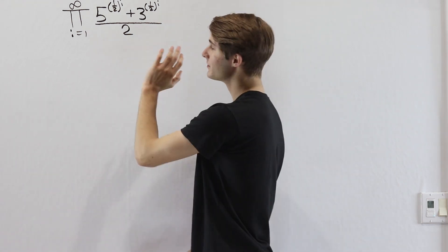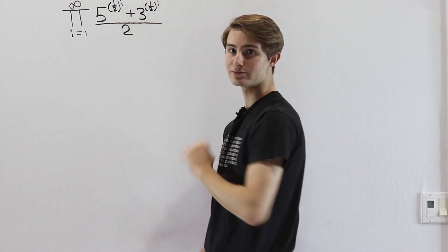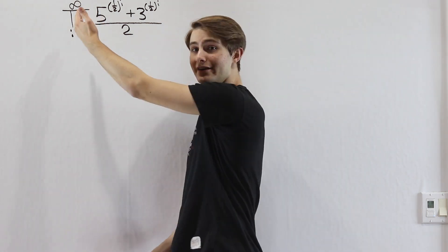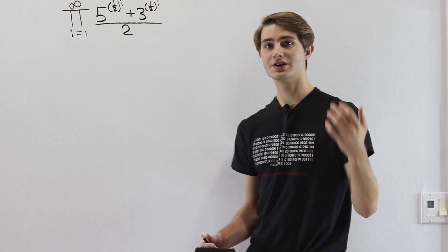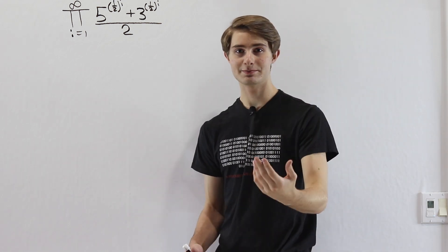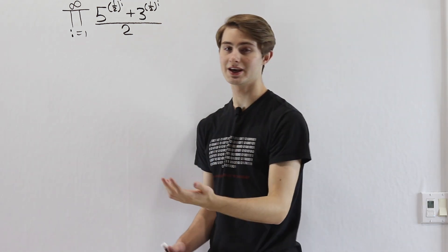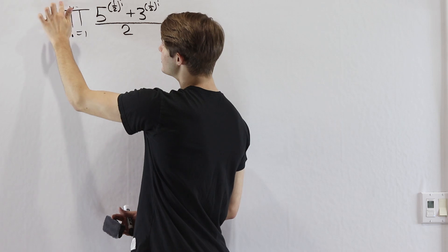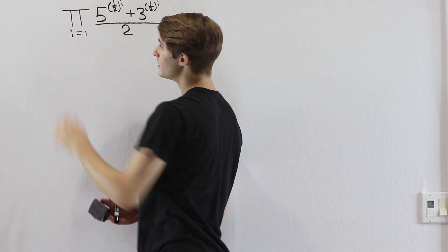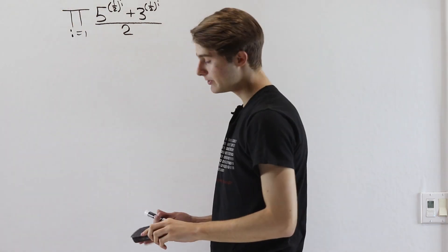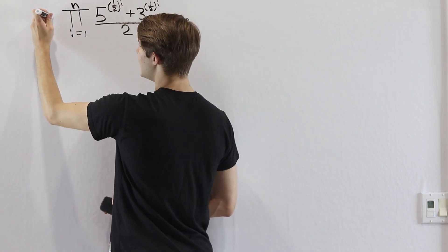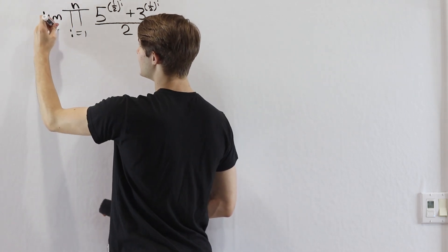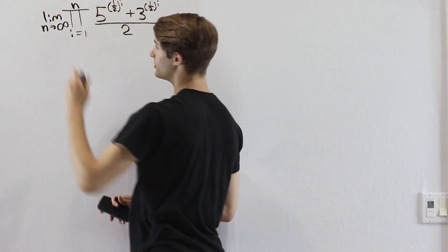The first thing we want to do when dealing with this kind of product is address the infinity. It's hard to deal with infinity from the get-go, so instead of taking the product from 1 to infinity right away, we're going to consider finite products and then extend to the case where we're at infinity. So the product goes from i equals 1 to n, and then we'll take the limit as n approaches infinity.